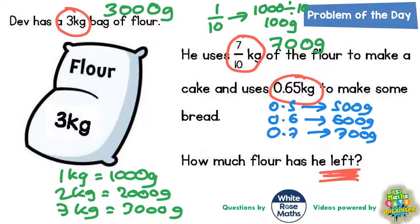So 0.65kg is between 0.6 and 0.7, so it's going to be between 600 and 700. Between 600 and 700 is 650g.